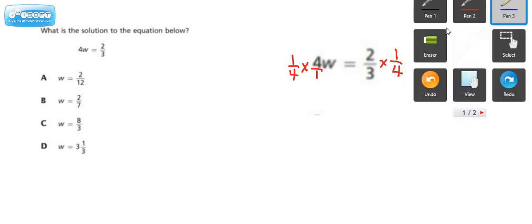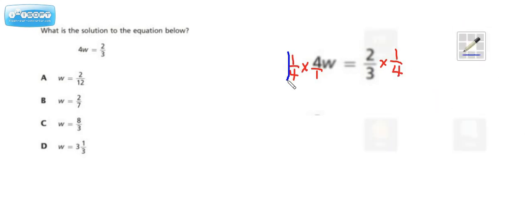Alright, now when we think about what happens to all of this, everything in this box here, when you multiply something by its reciprocal, it equals 1. Or if you just want to cancel out and do it that way, that's fine too. But in the end, 1 times w is going to be equal to w.